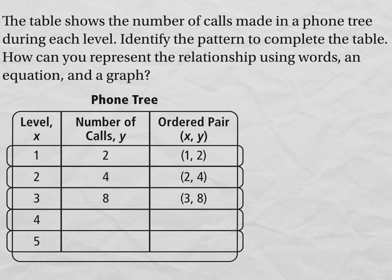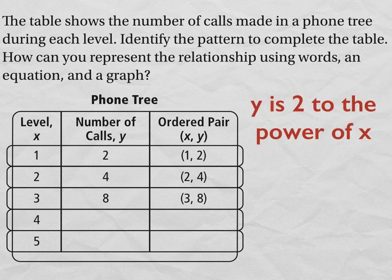So we can't add the same thing. We can't multiply by the same thing. And if you think about it, you can't actually multiply and then add or divide and then add or do anything like that to go from your x value to your y value. This is actually not a linear relationship. What you're doing each time is you're taking a base of 2 and you're raising it to the x power. So y is 2 to the power of x.